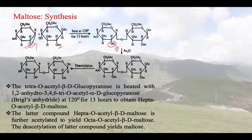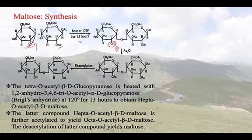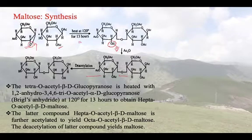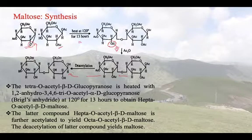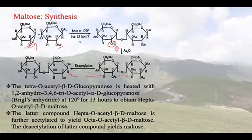That hepta-O-acetyl-beta-D-maltose was further acetylated to get octa-O-acetyl-D-maltose with the alpha-beta linkage, and then the molecule was deacetylated to get the final product, maltose.